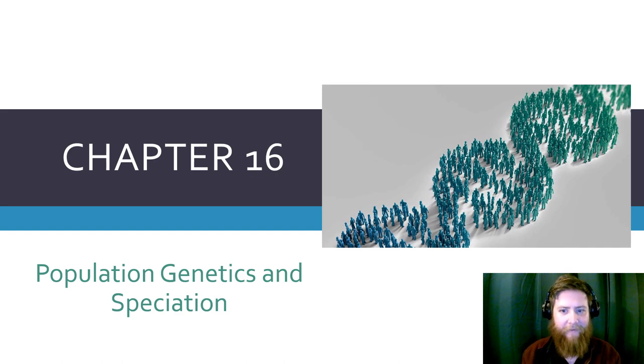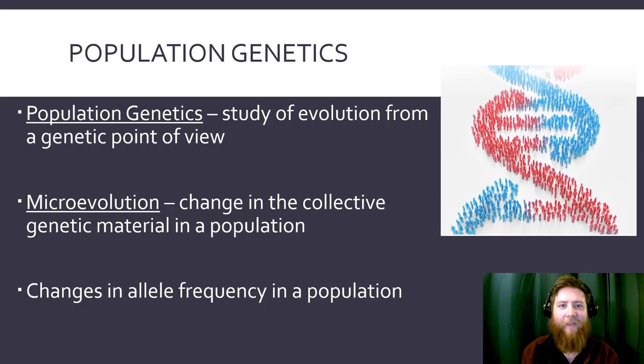Hello, biology, and welcome back to chapter 16. In this one, we're talking about population genetics and the process of speciation. We're going to jump into the finer details of how evolution happens on the day-to-day scale. All right, so the first thing we're going to talk about is population genetics.